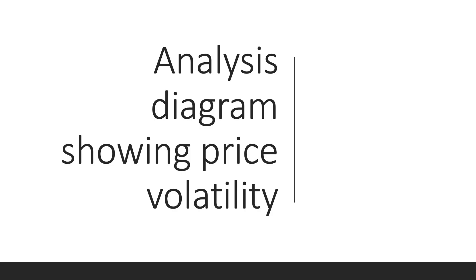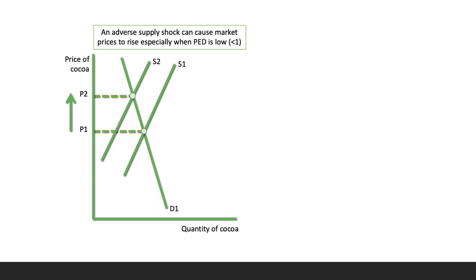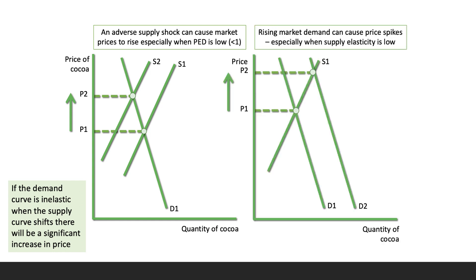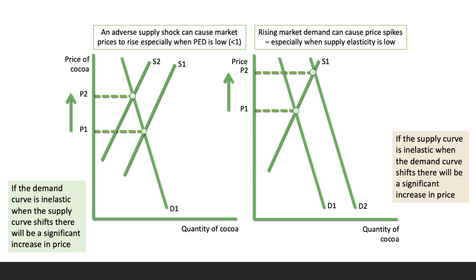Supply and demand analysis helps visualize the causes of price volatility. This diagram shows an adverse supply shock — such as poor weather or political problems — causing an inward shift of the supply curve, with price rising from P1 to P2 in equilibrium. That price increase is particularly pronounced when the demand curve is drawn as price inelastic. On the demand side, an outward shift in market demand, combined with low elasticity of supply as shown in the right-hand diagram, can again cause a significant rise in price.